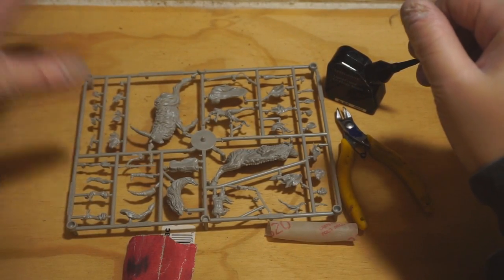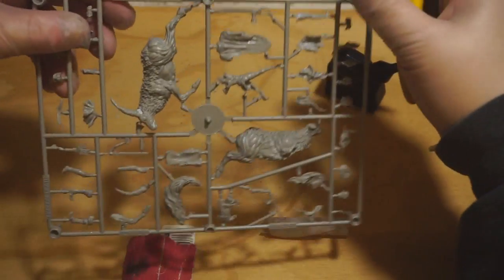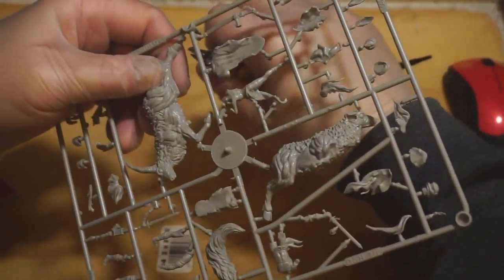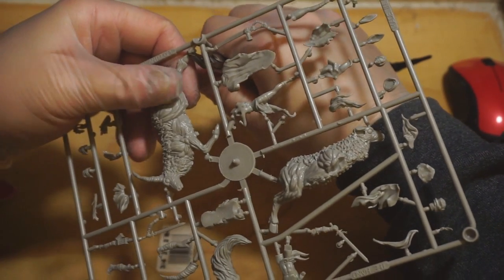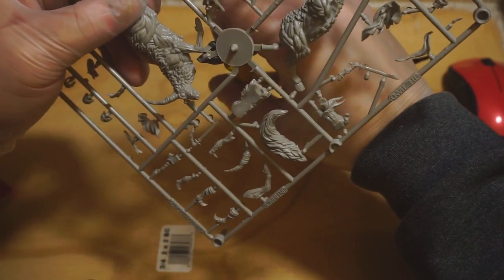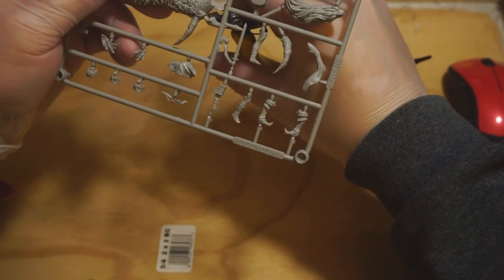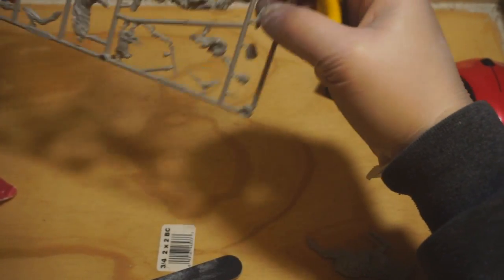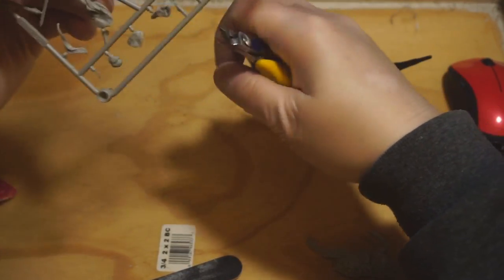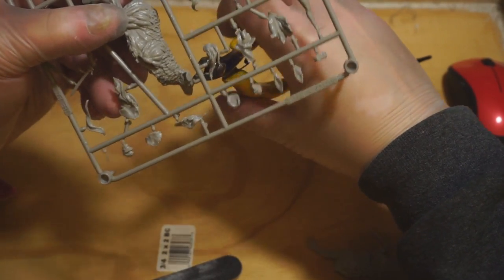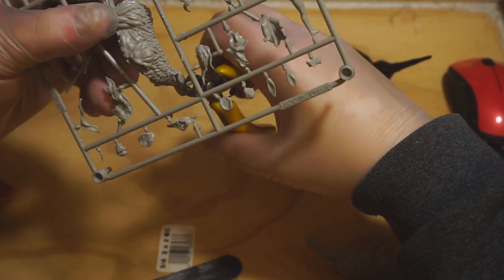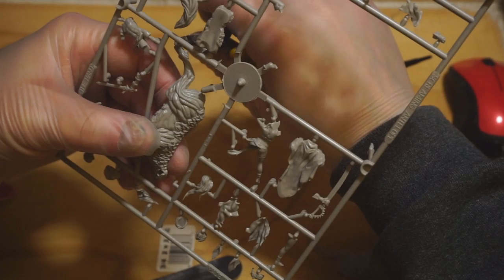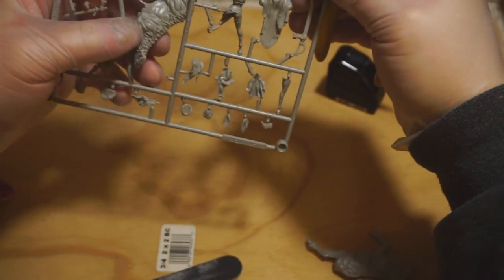So anyway, I'm going to start off by clipping all of the parts related to the antelope. And the clippers are handy. It keeps you from accidentally breaking the parts as you remove them. If you just try to tear the part off of the sprue, you can create all kinds of problems that you then have to go back and fix. So this is one of the best ways to avoid that.